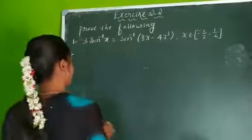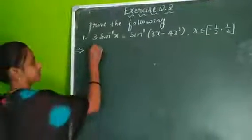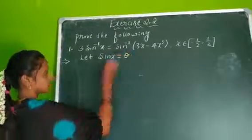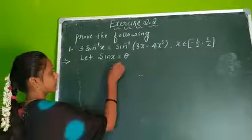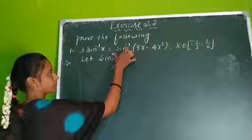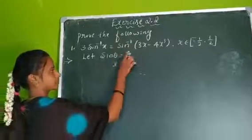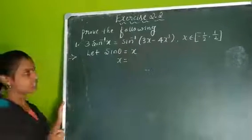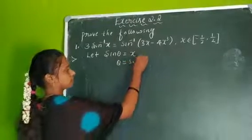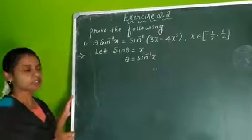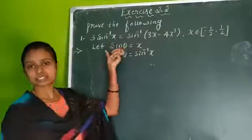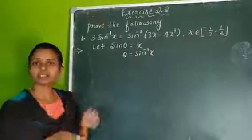To prove this, let sine theta equal x. Then theta can be written as sine inverse of x. So LHS has a sine inverse and RHS also has a sine inverse. You just take the variable: x is nothing but sine theta, and theta can be written as sine inverse of x.